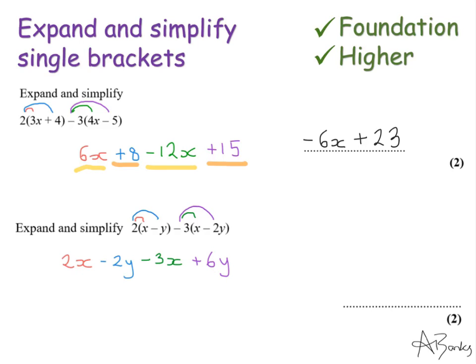Okay just collect together my terms as before so I have my 2x and minus 3x so all together that's a minus x and then with my y's I have minus 2y and plus 6y so all together that's plus 4y.